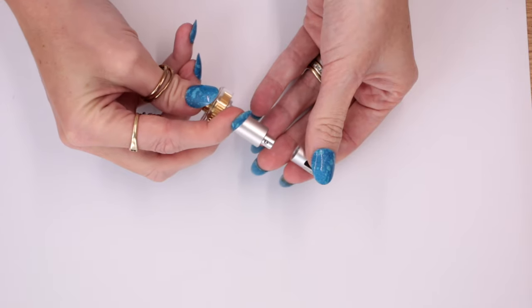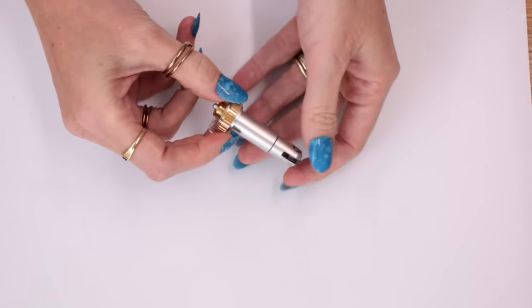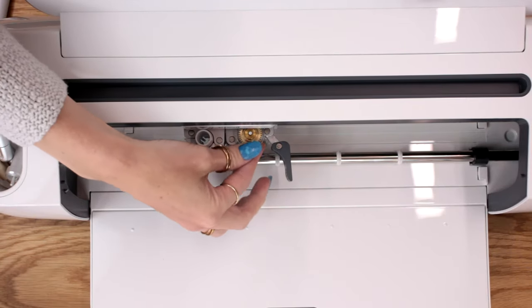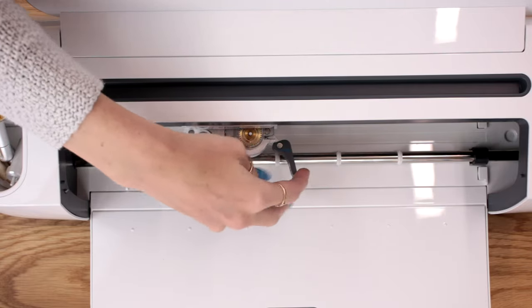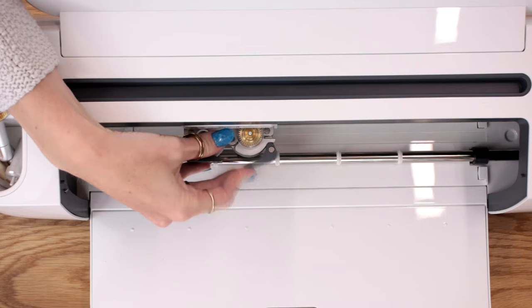Really easy to swap them. You just press the button down, it will release the tip, and then to put the tip back on, you press the button down, place it back in, release the button, and your tip is then on there. As with all blades, you want to put it into the B clamp.